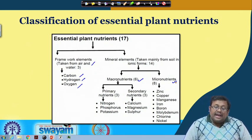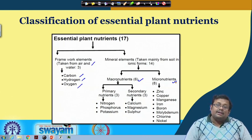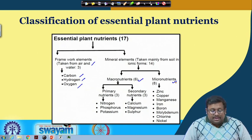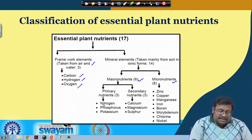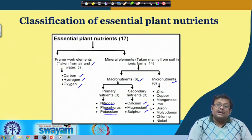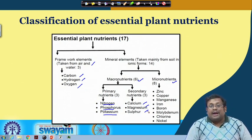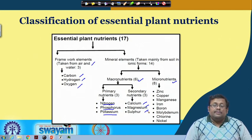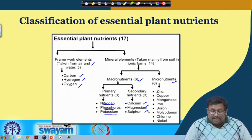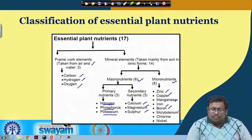Framework elements are required for the production of cellulose and other building block molecules for the plant body. The 14 mineral elements are further divided into macronutrients and micronutrients based on the relative amount needed. There are 6 macronutrients subdivided into 3 primary nutrients — nitrogen, phosphorus, and potassium — required in higher quantities and present in fertilizers, and 3 secondary nutrients — calcium, magnesium, and sulphur — required in moderate quantities. The 8 micronutrients are zinc, copper, manganese, iron, boron, molybdenum, chlorine, and nickel, required in minute quantities but still essential.